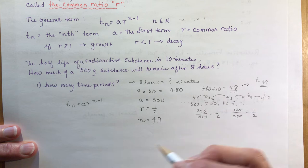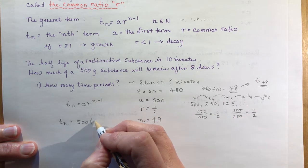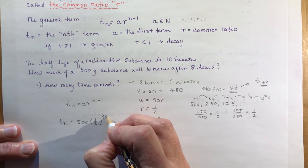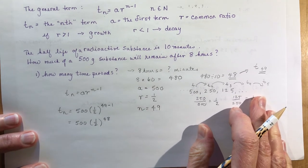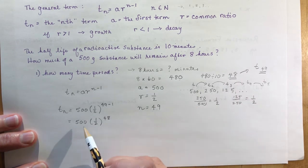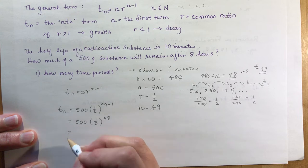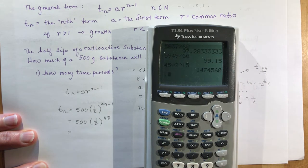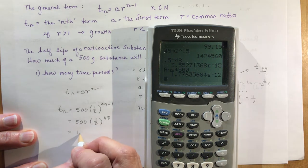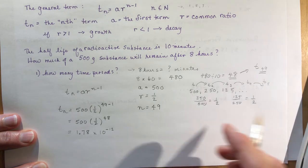So the calculation is: tn equals 500 times one half to the power of 49 minus 1, which is 500 times one half to the 48th power. Remember BEDMAS — do the exponent before multiplication. Calculating 0.5 to the power of 48, then times 500, gives approximately 1.78 times 10 to the minus 12.